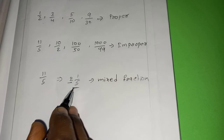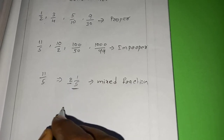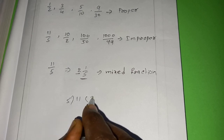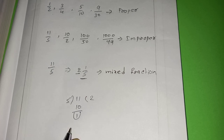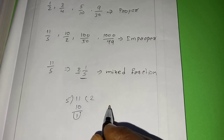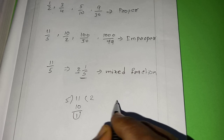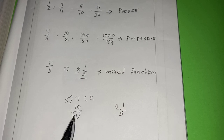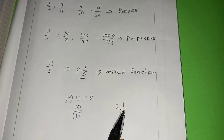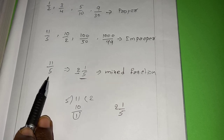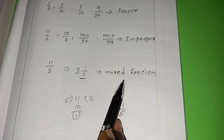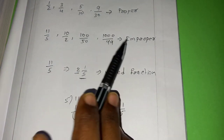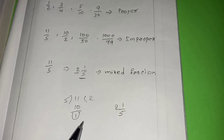How to write a mixed fraction: if you divide 11 by 5, you get a quotient of 2 and remainder of 1. So the mixed fraction is written as quotient, remainder by divisor — that is 2 and 1 by 5. You can represent an improper fraction in the form of a mixed fraction. Only improper fractions can be represented as mixed fractions — proper fractions cannot.